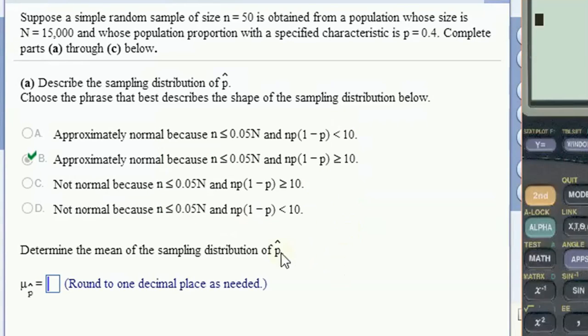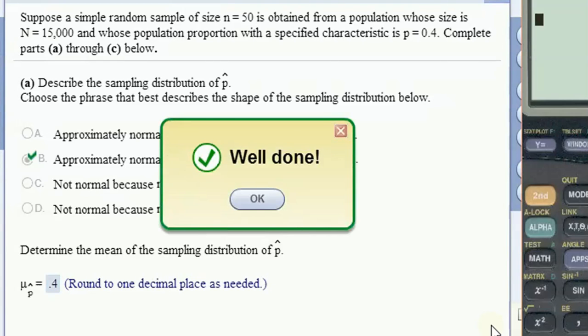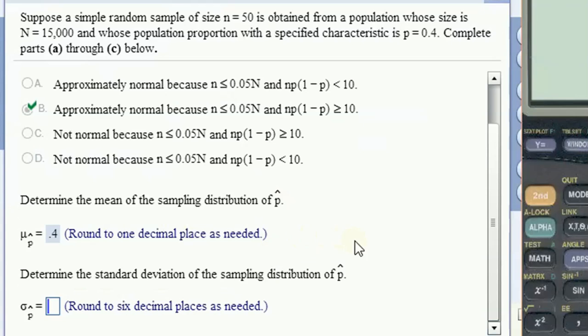Now, the sample proportion is going to have a sampling distribution with a mean equal to the population proportion. So it's going to be equal to 0.4.